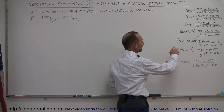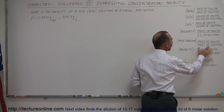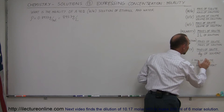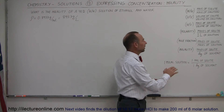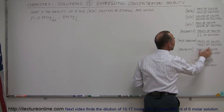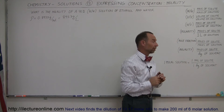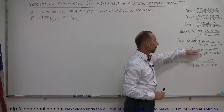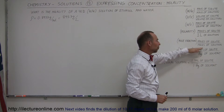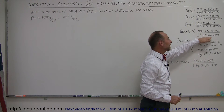Notice the definition. For molarity, it was the number of moles per liter of solution. For molality, it's the number of moles of solute to the number of kilograms of the solvent. So molality is the number of moles of solute to the number of kilograms of solvent — not solution. There are two differences: it's moles to mass versus moles to liters, and it's mass of the solvent as opposed to volume of the solution.